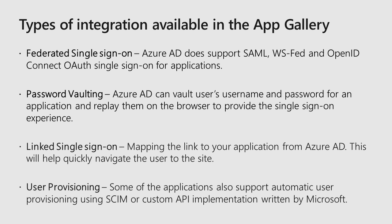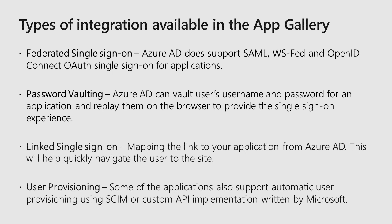Link single sign-on is another technique where users can easily configure a quick link to a website they want to navigate to. A great feature in Azure Active Directory is user provisioning — you can automate the provisioning of identities from Azure Active Directory to third-party SaaS applications using SCIM or custom connectors written by Microsoft. Now we will see a demo of the Azure Active Directory App Gallery.